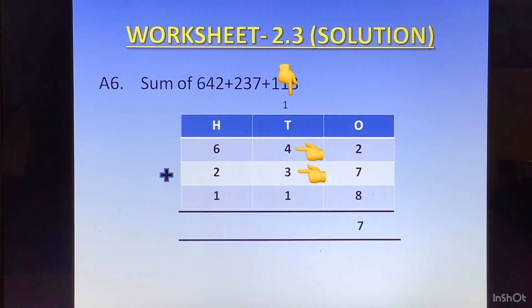In the tens column we have 4 plus 3 is 7, plus 1 is 8, and plus 1 of the carry making it 9. Then in the hundreds column we have 6 plus 2 is 8, plus 1 is 9. This makes our answer as 997.